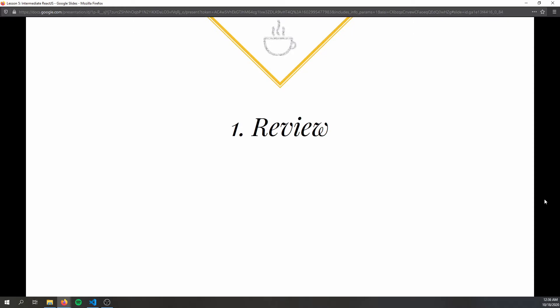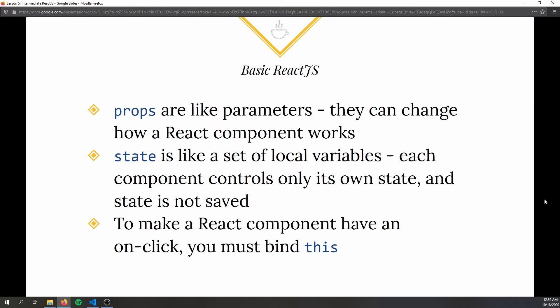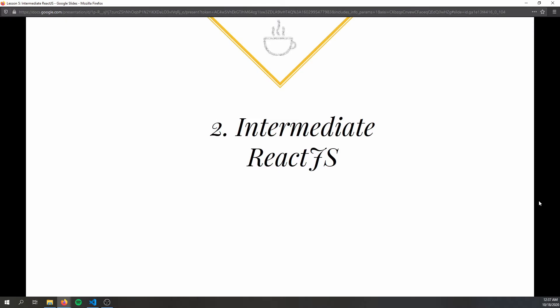A quick review of last week: last week was Basic React.js and we covered three major things — props, state, and onClick functions. Props are like parameters that can change how a React component works. State is like a set of local variables where each component controls only its own state. State can be modified multiple times and influences the component more frequently than props. For onClick, you must use binding — binding 'this' to the function — due to a quirk in React.